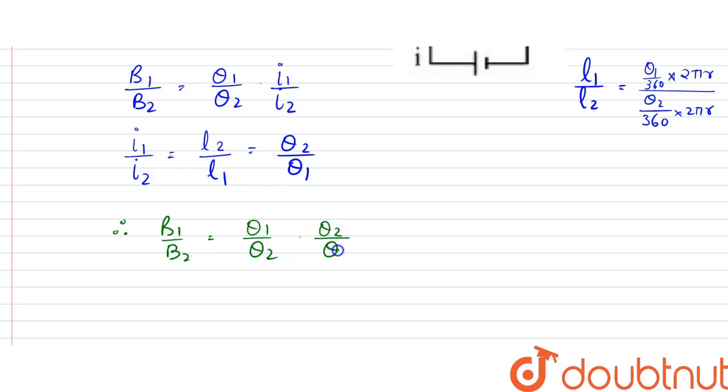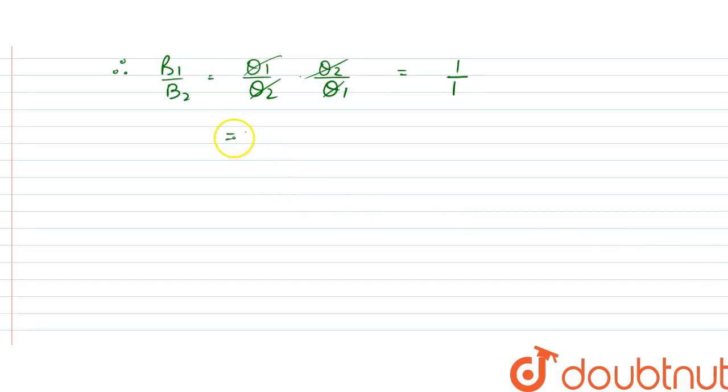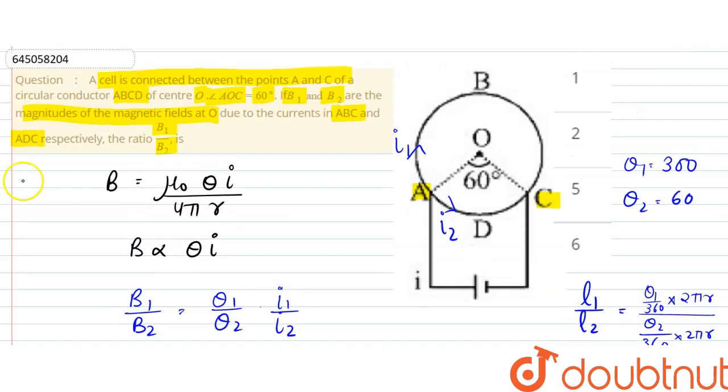So this gets cancelled, so it is 1 by 1. So our answer is 1, that is option A. Thank you.